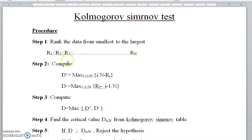In step 2, we have to compute two things: D+ and D−. The formula for D+ is the maximum over 1 ≤ i ≤ n of (i/n − ri), and D− is the maximum over 1 ≤ i ≤ n of (ri − (i−1)/n). Using these two formulas we have to find D+ and D−.